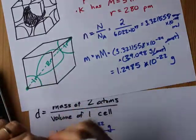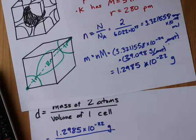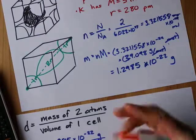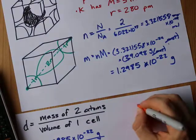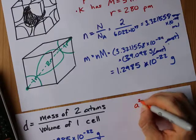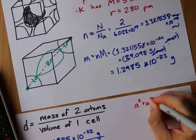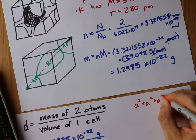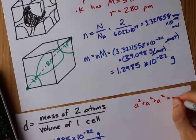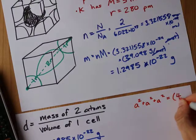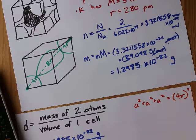You might remember the Pythagorean theorem, a squared plus b squared equals c squared. This is the same except you have three dimensions. a squared plus a squared plus a squared gives you the diagonal, 4r, all squared. Now a is the edge length here.